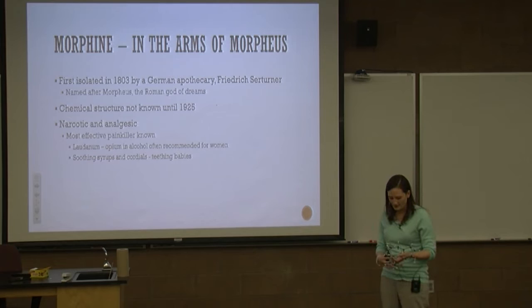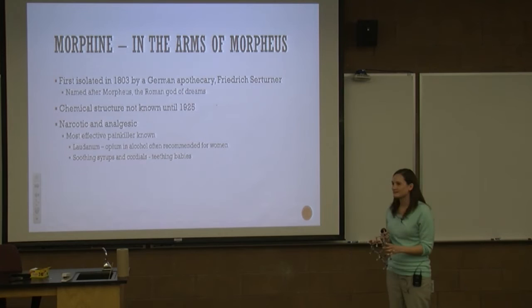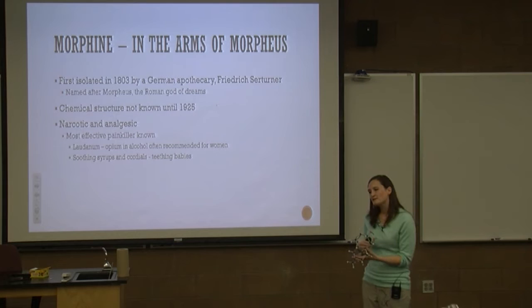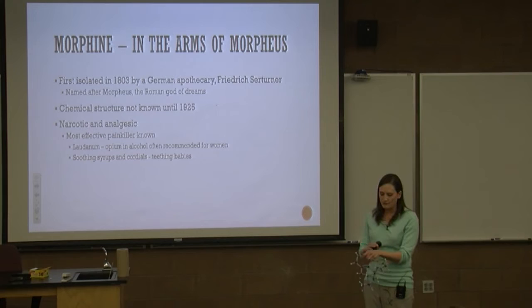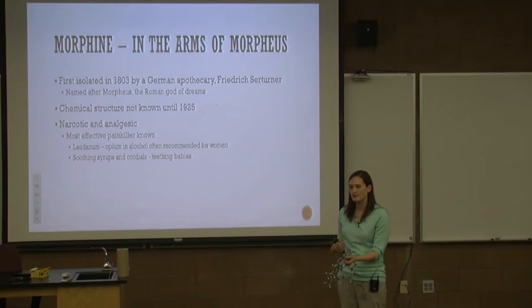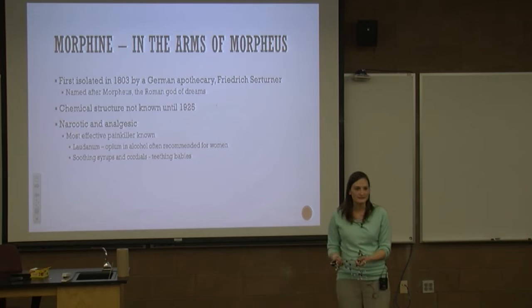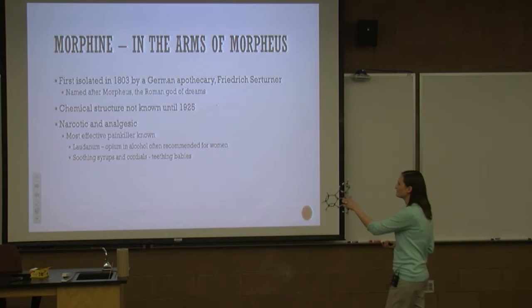Morphine falls under two categories: a narcotic and an analgesic. An analgesic is just a pain reliever — other common ones are aspirin, Tylenol, or Motrin. The opiate family is a little different than over-the-counter ones: over-the-counter drugs reduce prostaglandins at the site of a wound, reducing inflammation and pain. The opiates don't do anything local — what they do is affect how your brain perceives pain. That's actually what makes them more addictive: it's messing with your brain rather than just a localized pain relief.